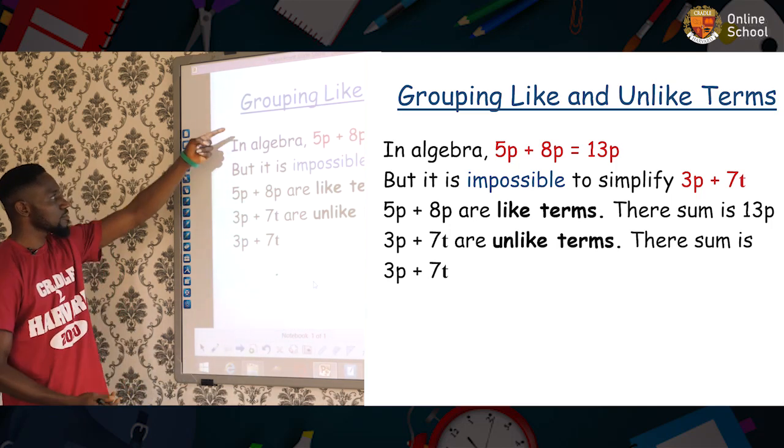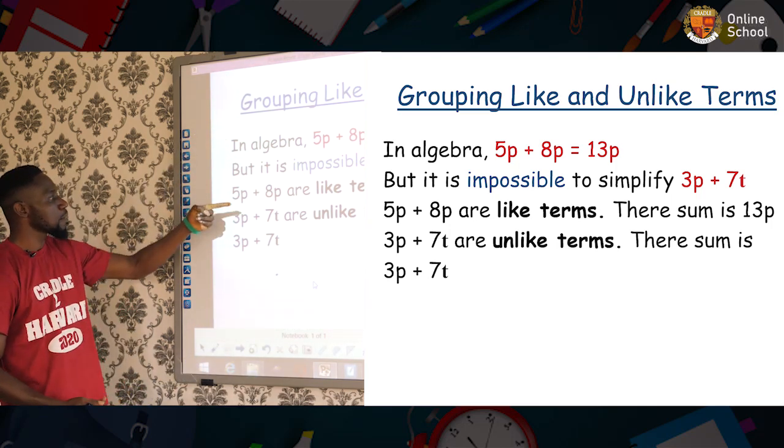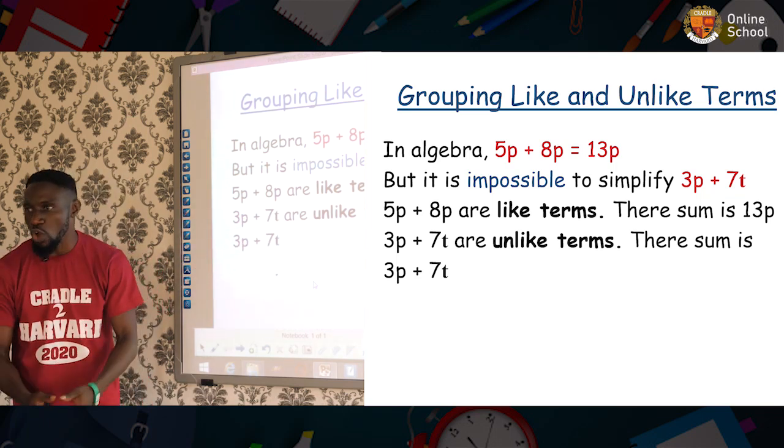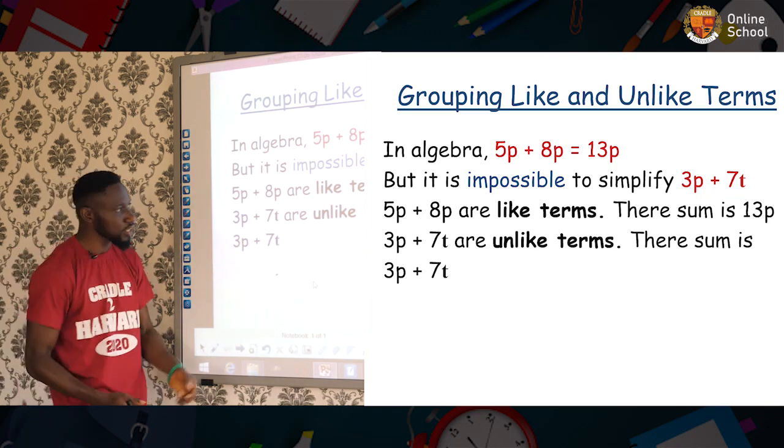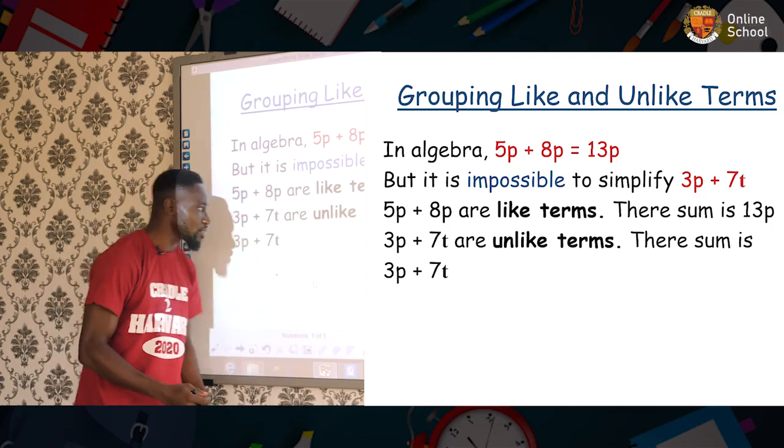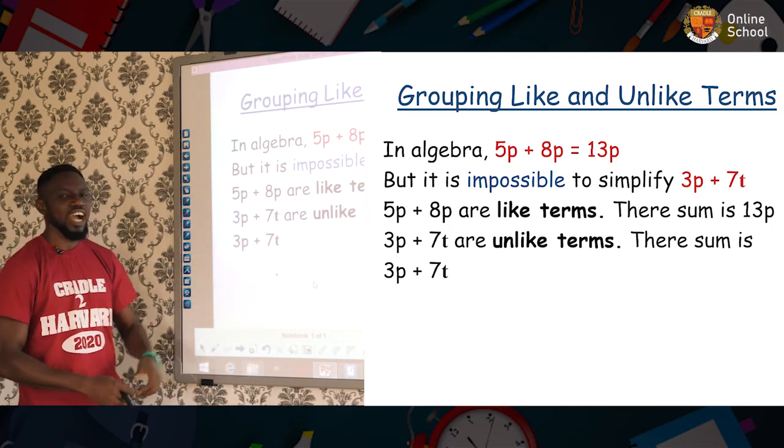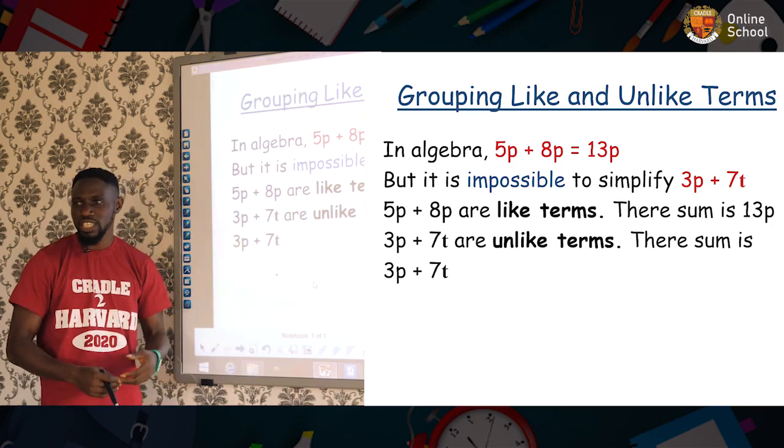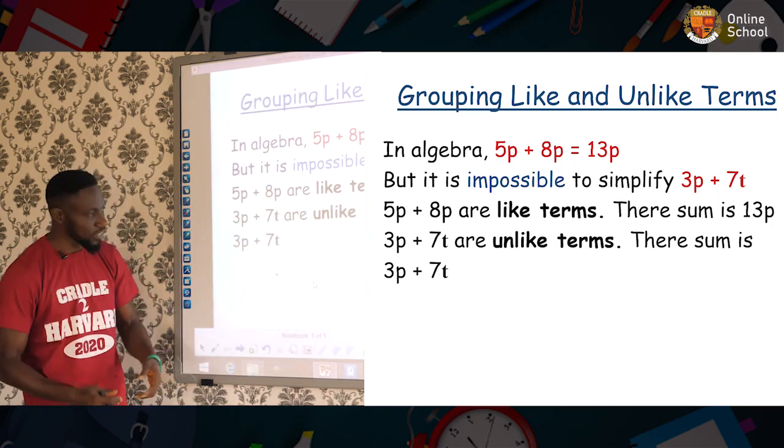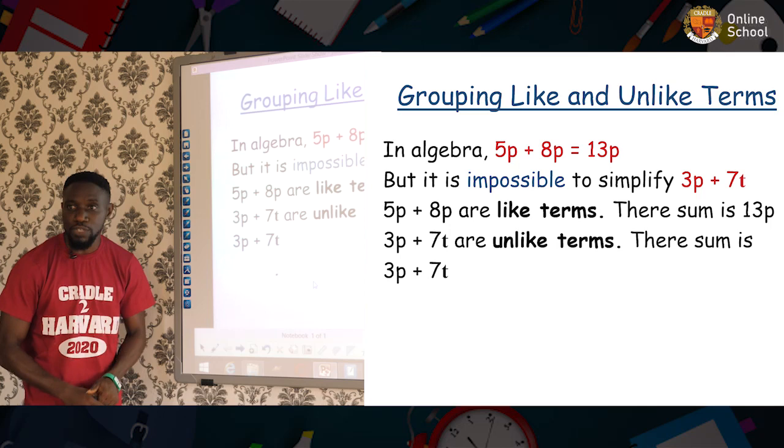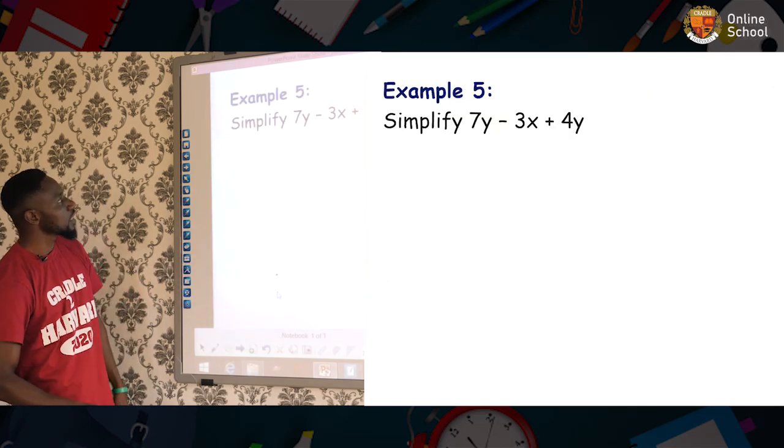Now, let's look at this. From up there, we said 5p + 8p are like terms. And as such, they can be summed together. And when you sum it, it will give you 13p. But in the situation of 3p + 7t, they are unlike terms. And as such, it cannot be solved. And as such, the answer is 3p + 7t.